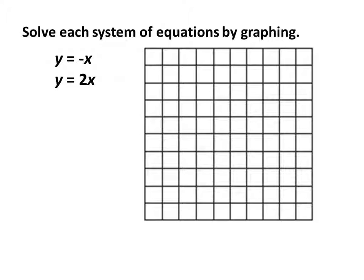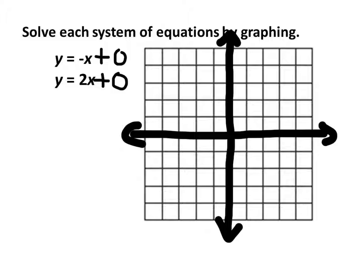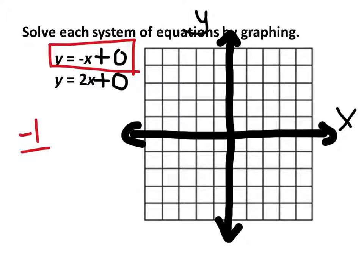On these ones, what is our y-intercept? Zero — those phantom zeros. So we do need to see those, and now we can start graphing. Since they're both zero, we'll just put this right down the middle. This is our x-axis and y-axis. What's our slope for this first one? Negative 1 over 1. It starts at the origin, so we go down one to the right one, down one to the right, and so forth. You can see it continues in this direction as well.